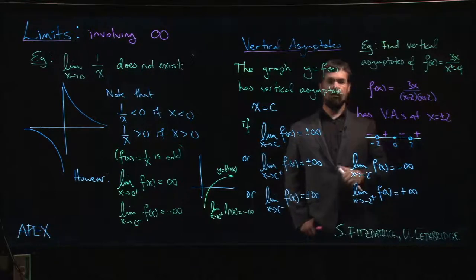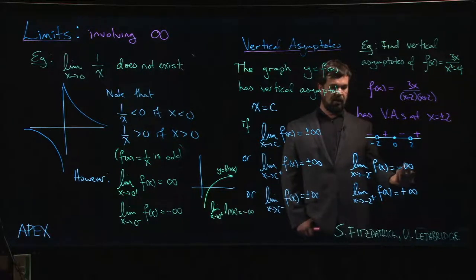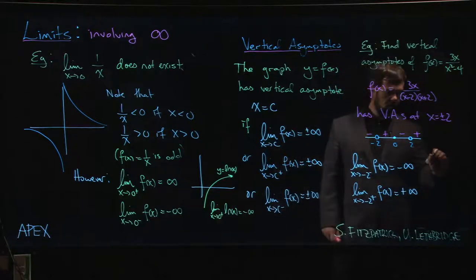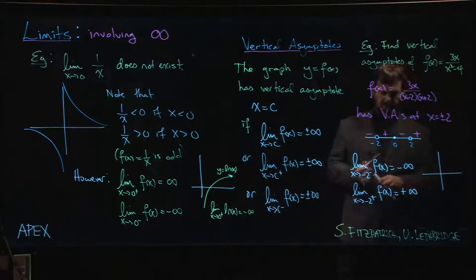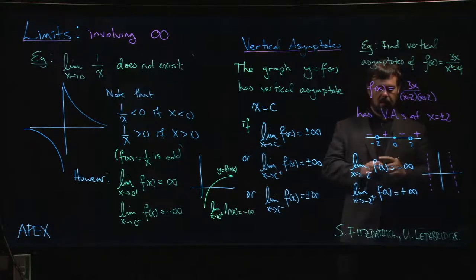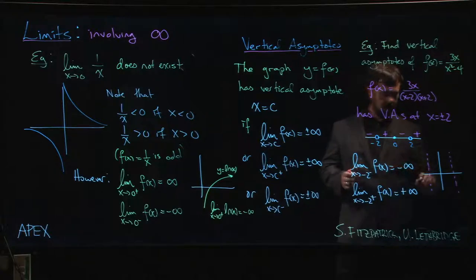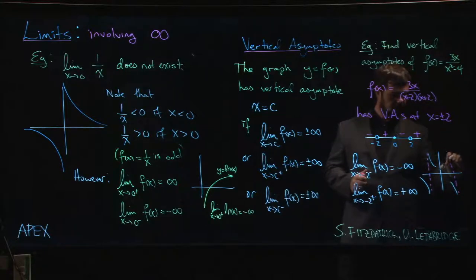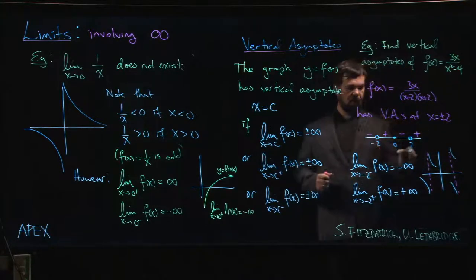Similarly, we can get the limits, the left-hand limit and the right-hand limit at plus 2. And if we were trying to sketch, we would know that at least as a first step towards a sketch of the graph at those two asymptotes, I would know that I have to go down to minus infinity, up to plus infinity, down to minus infinity, up to plus infinity.